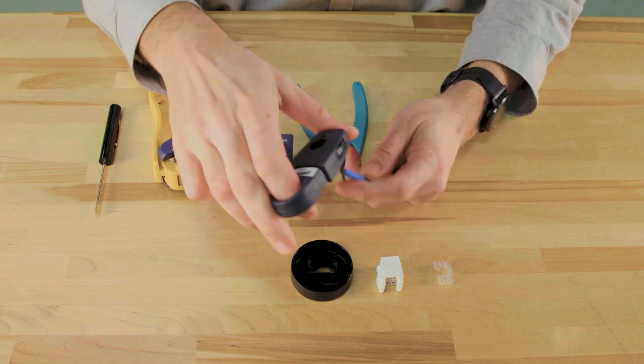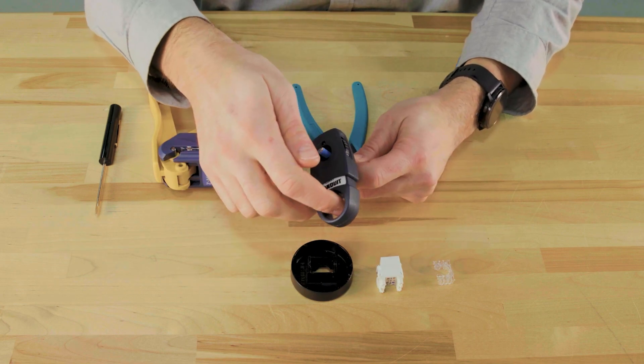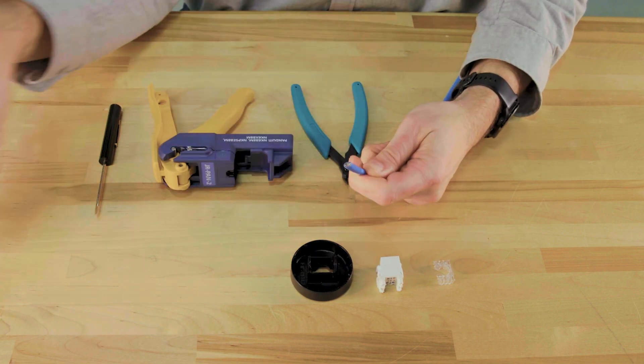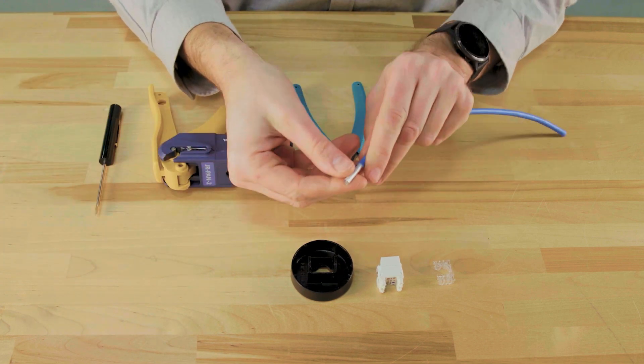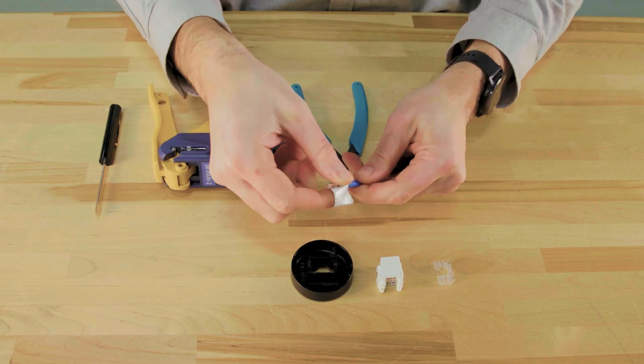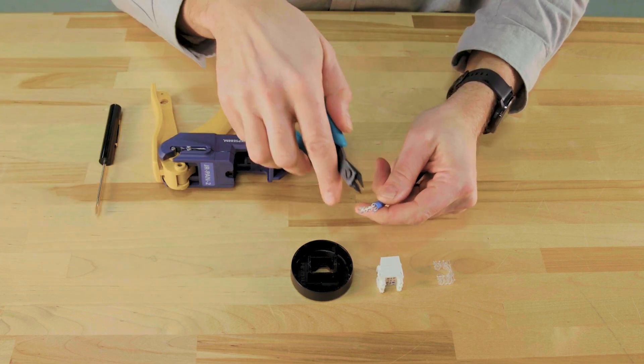First, strip off about two inches of cable jacket from the wire. Bend the cable back and forth to remove the jacket. Next, remove the foil. You may need to use your cutter to get it started.